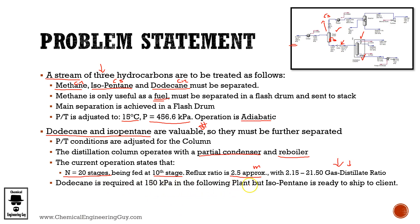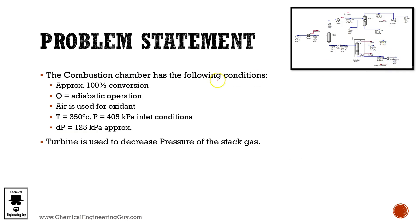The distillate rate is set, and dodecane is required at 150 kilopascals for the following plant unit. Isopentane, however, is ready to ship to the client as-is, so technically it can be left at its current conditions. But the dodecane must be pressurized for further treatment.